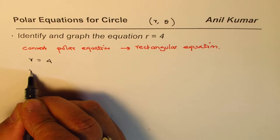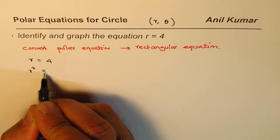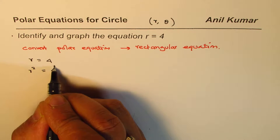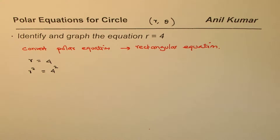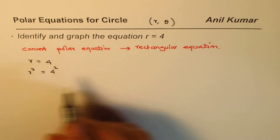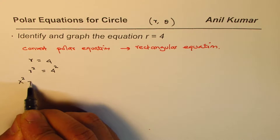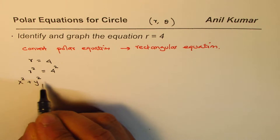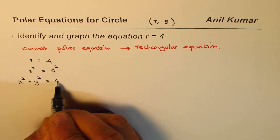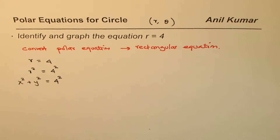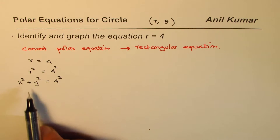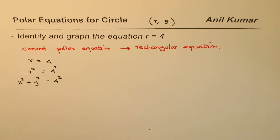We need to convert this to a rectangular equation. Starting with r equals 4, if we square both sides it becomes r squared equals 4 squared. In rectangular coordinates, r squared is x squared plus y squared, so we have x squared plus y squared equals 4 squared.